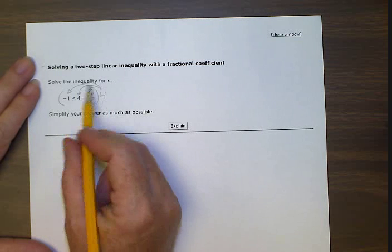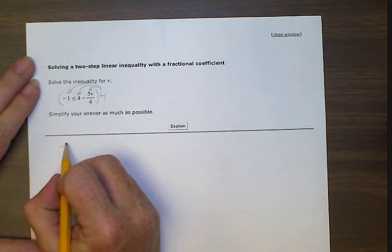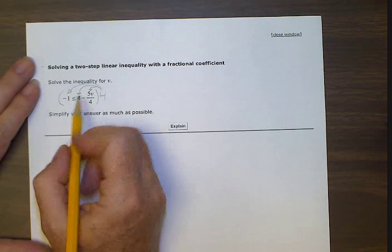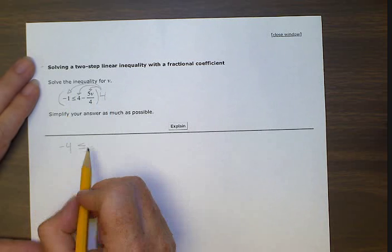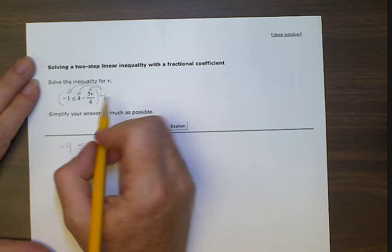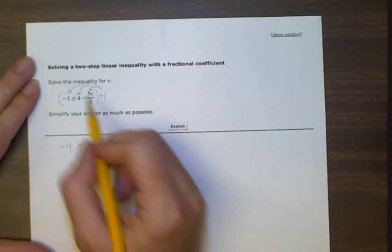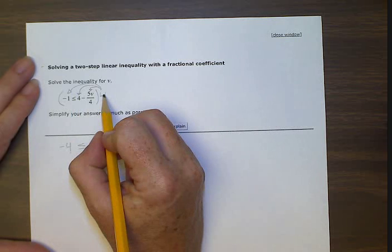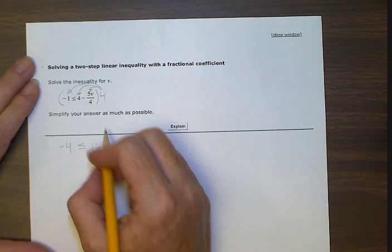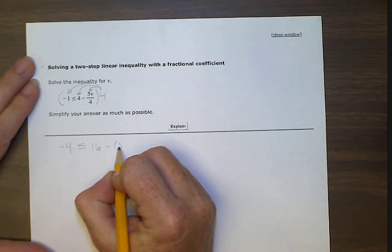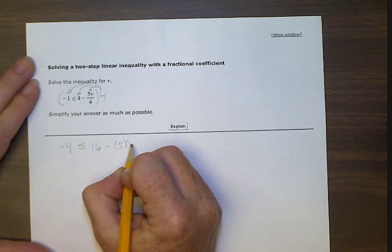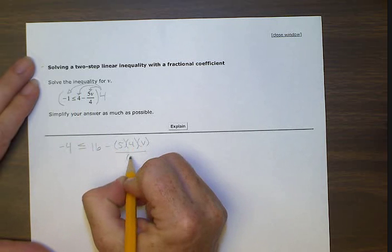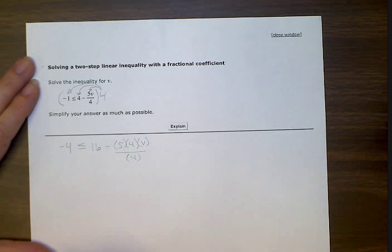So four times negative one gives us negative four. That is still going to keep our sign the exact same way, less than or equal to. Four times this four will give us 16. Four times this, I'm just going to keep that written like this: five times four times v divided by four, so we can see all the parts that are inside.